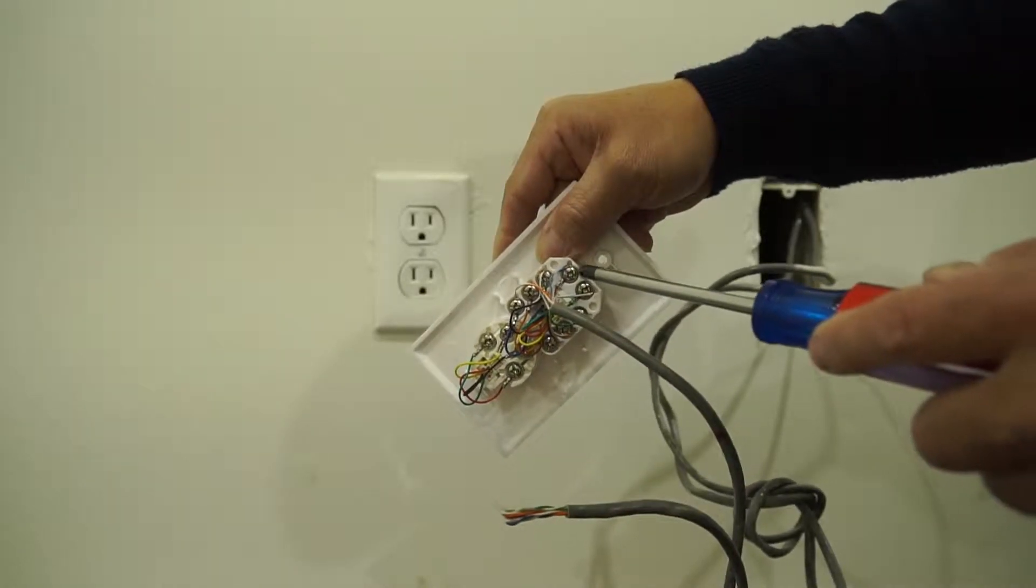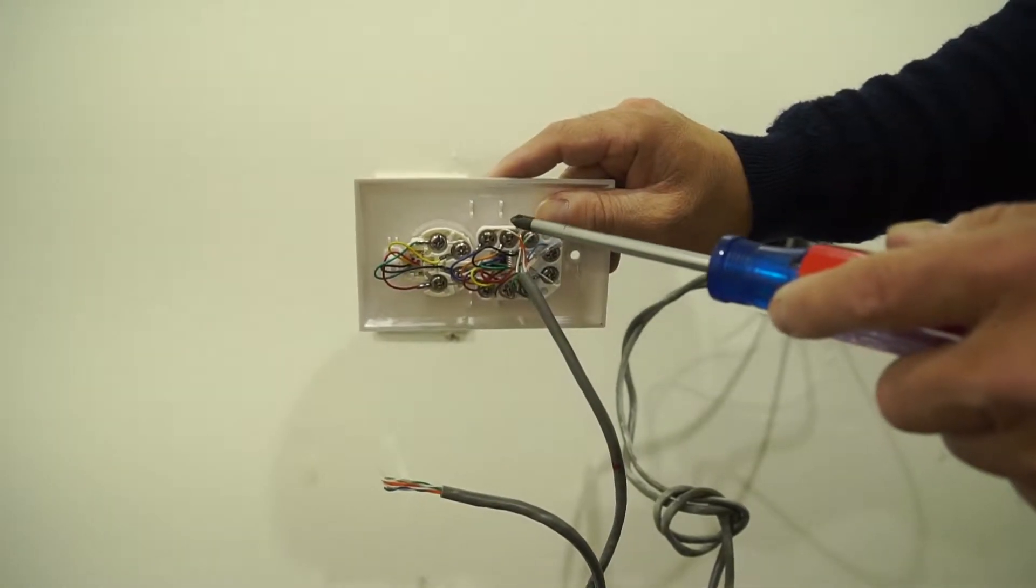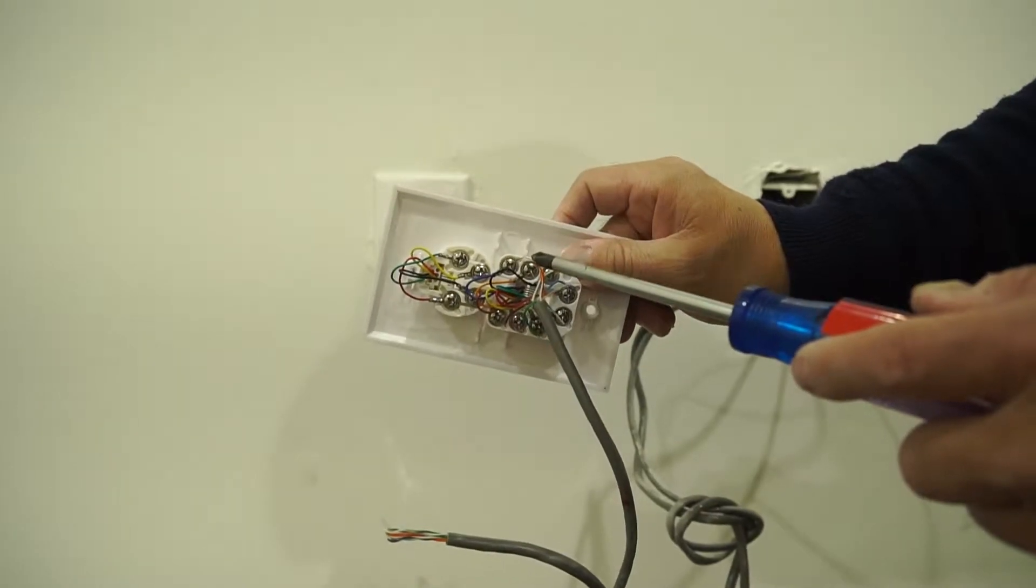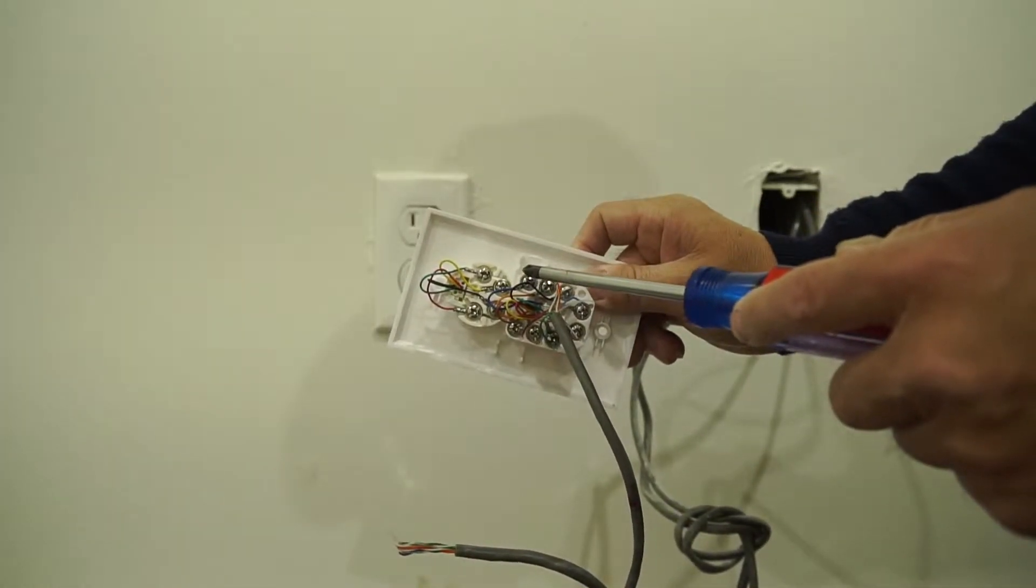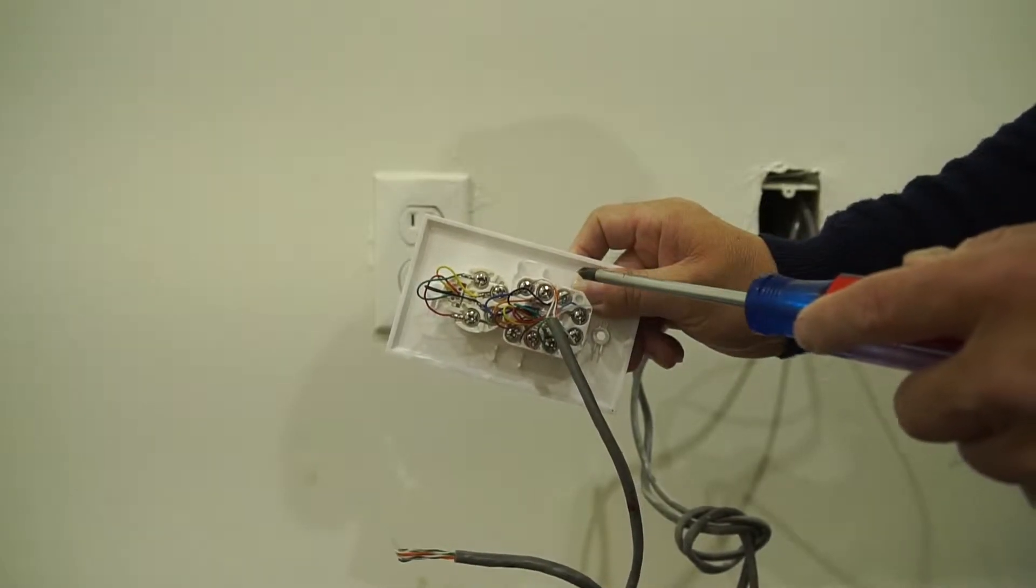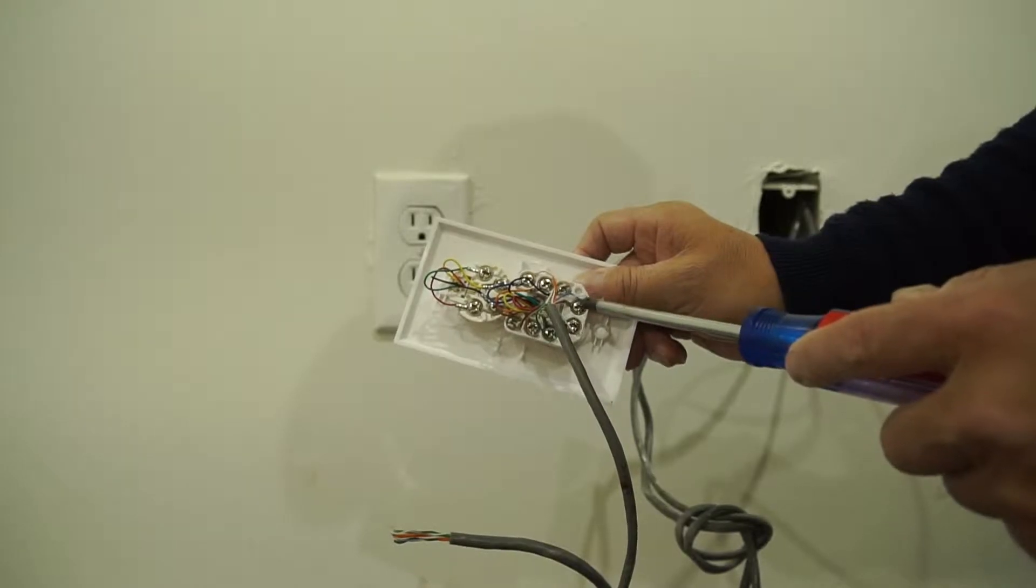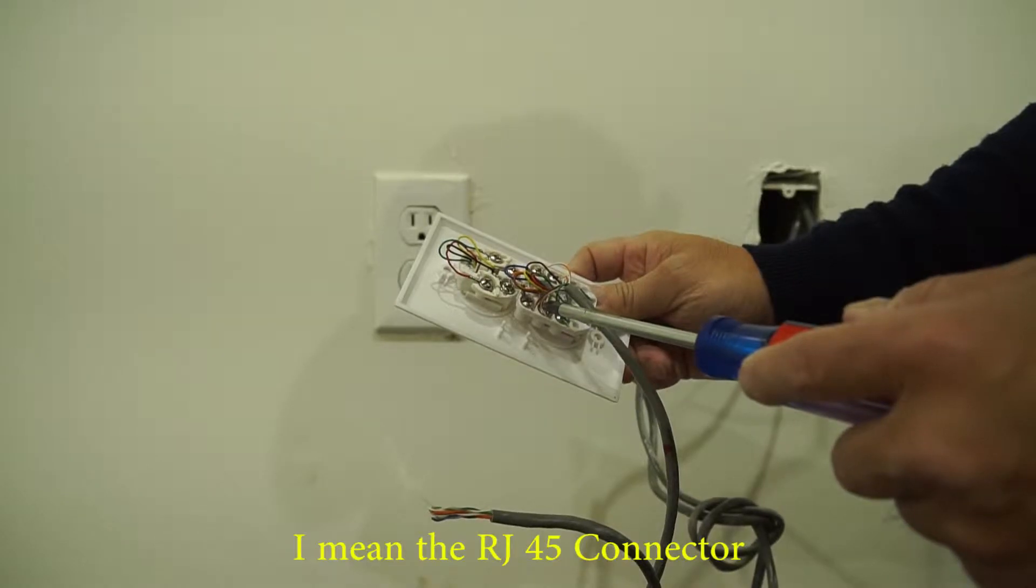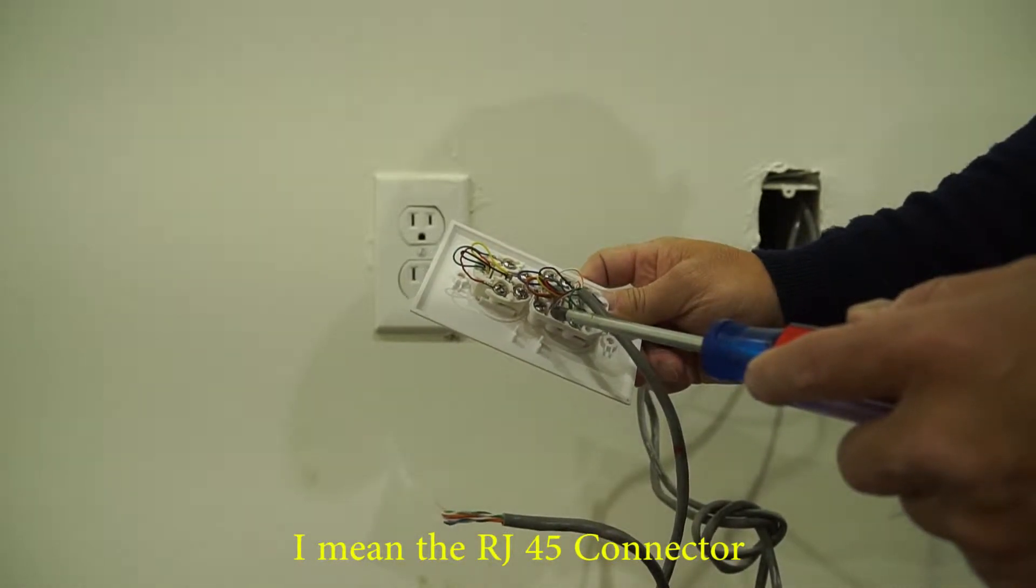And here we got the blue white and the solid blue, as well as the solid orange and the orange white. If I'm not wrong, this would be one two three four five six seven eight on the other side of the jack.